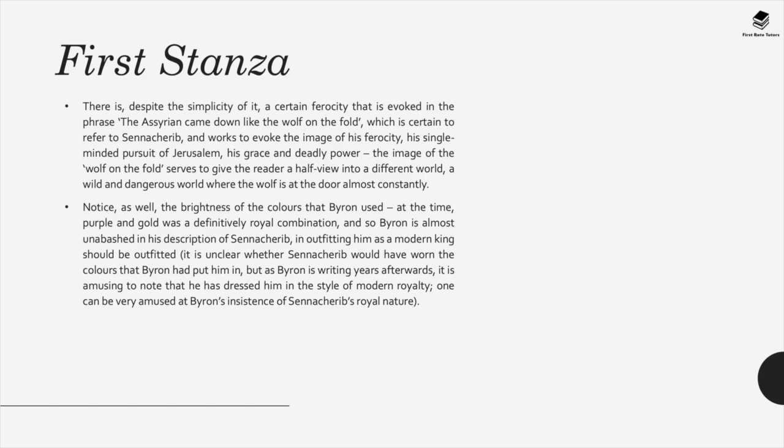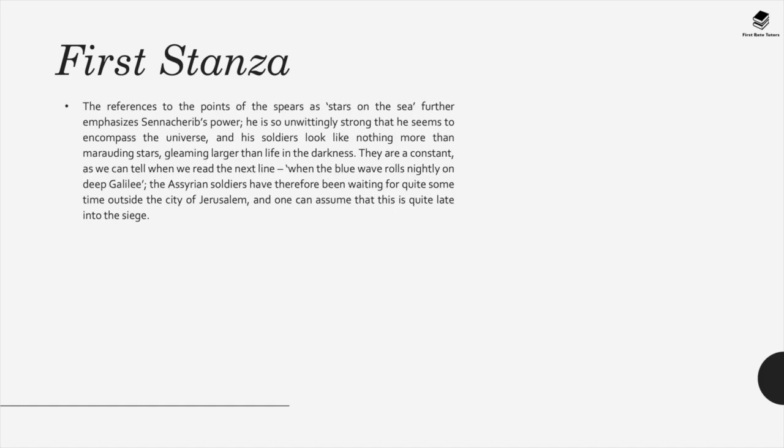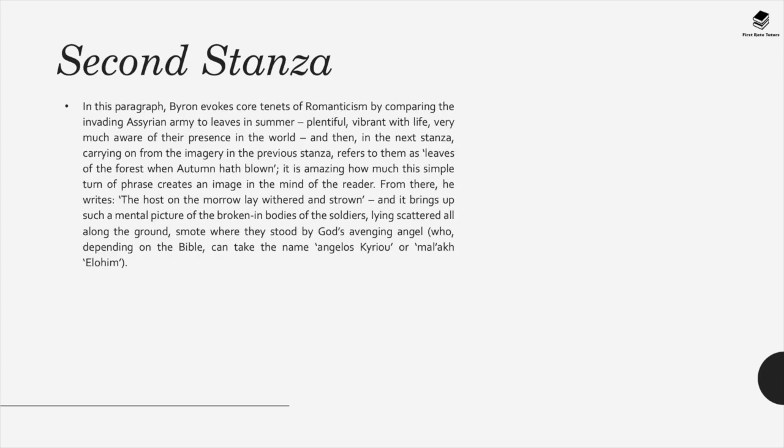Byron uses vivid colours — purple and gold were seen as a royal combination — outfitting Sennacherib as a modern king. References to the points of spears as stars in the sea further emphasise his power, as the soldiers look like marauding stars gleaming in the darkness. The phrase 'the blue wave rolls nightly on the deep Galilee' suggests the Assyrian soldiers have been waiting outside Jerusalem for quite some time.